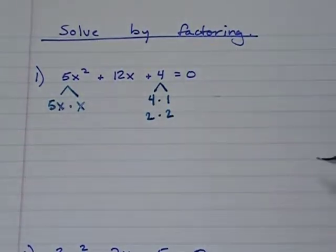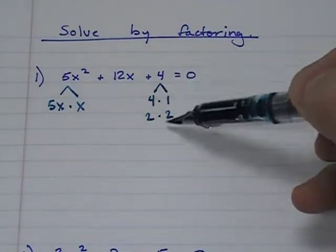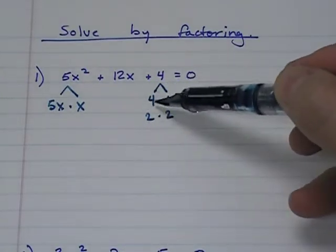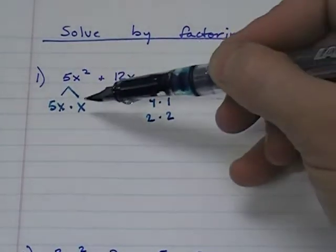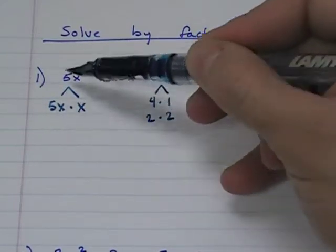And the rule here is real simple. These numbers have to multiply to give you this. These numbers have to multiply to give you this.